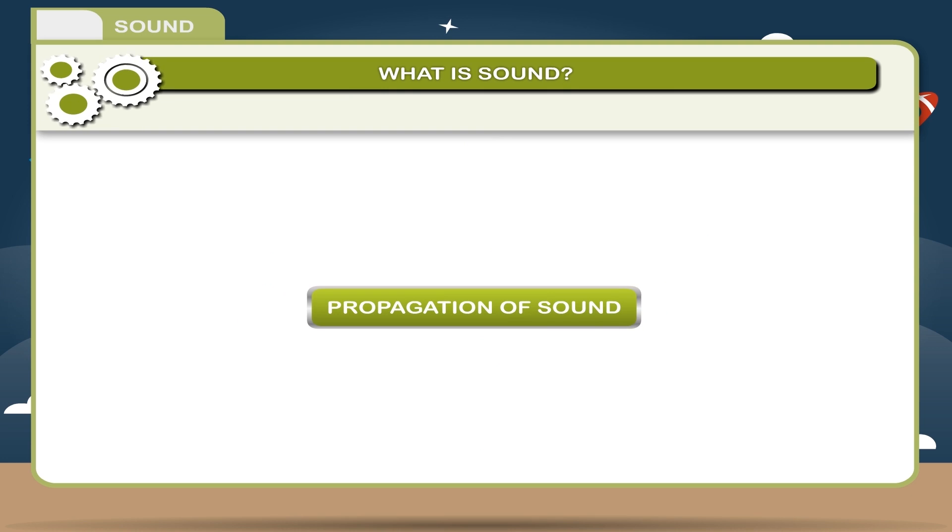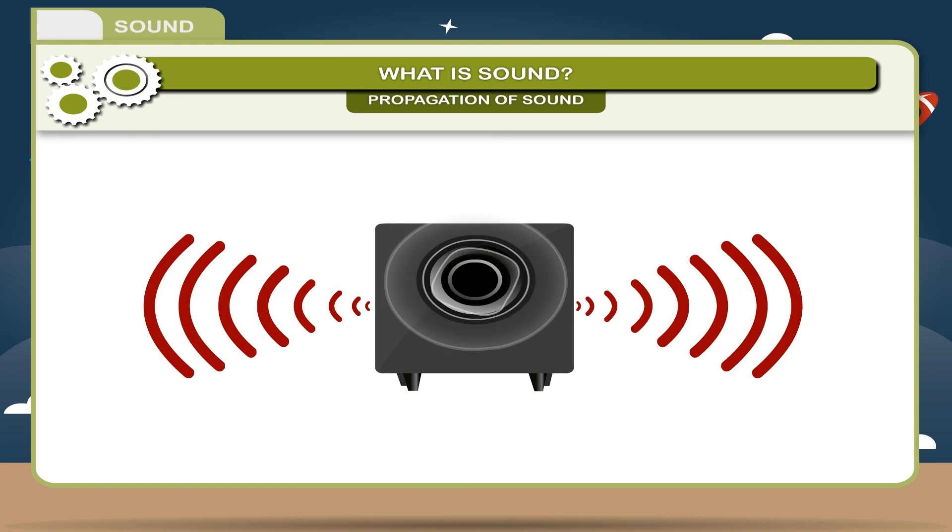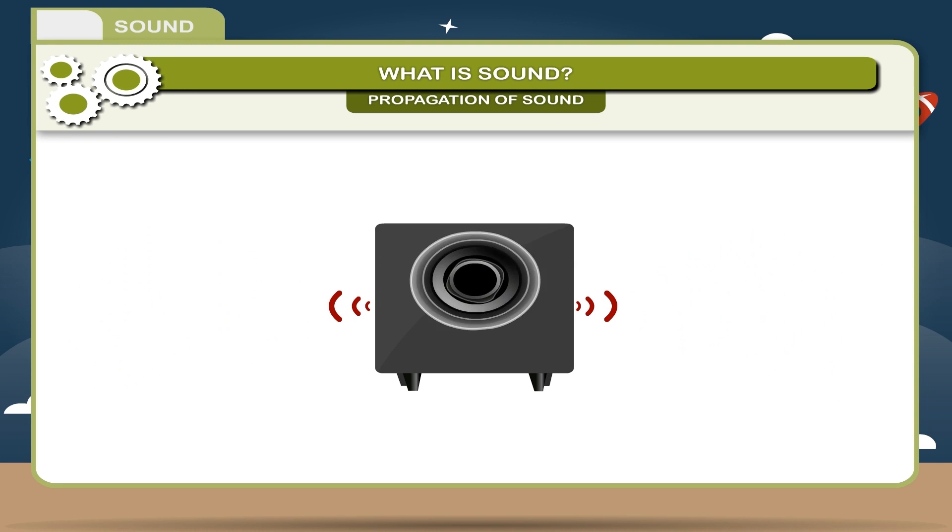Propagation of sound. When a body vibrates, it transfers its energy to the air molecules around it. On receiving this energy, the air molecules begin to vibrate in exactly the same way as the vibrating body.